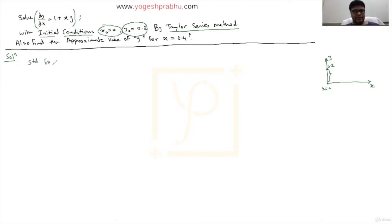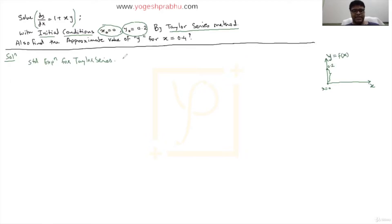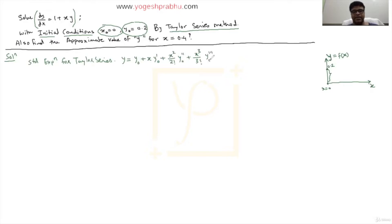Let me write down the standard expression for Taylor series. Note that f(x) and y are the same thing. The Taylor series expression is: y equals y naught, plus x times y naught dash, plus x squared over 2 factorial times y naught double dash, plus x cubed over 3 factorial times y naught triple dash, and so on.